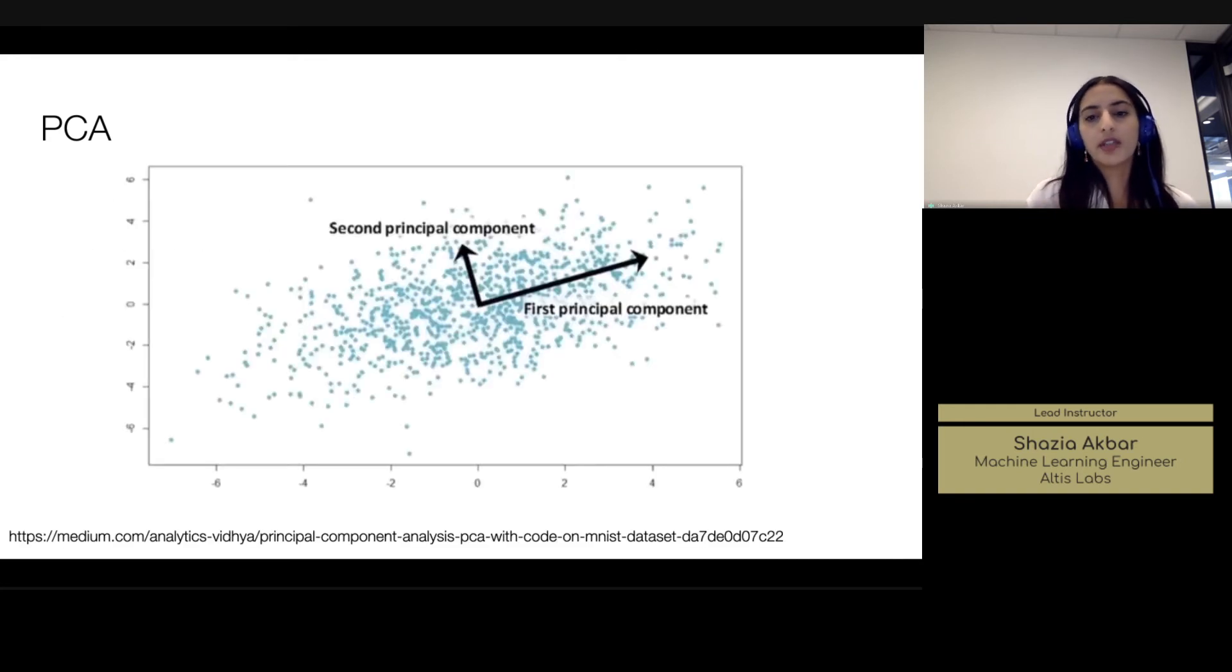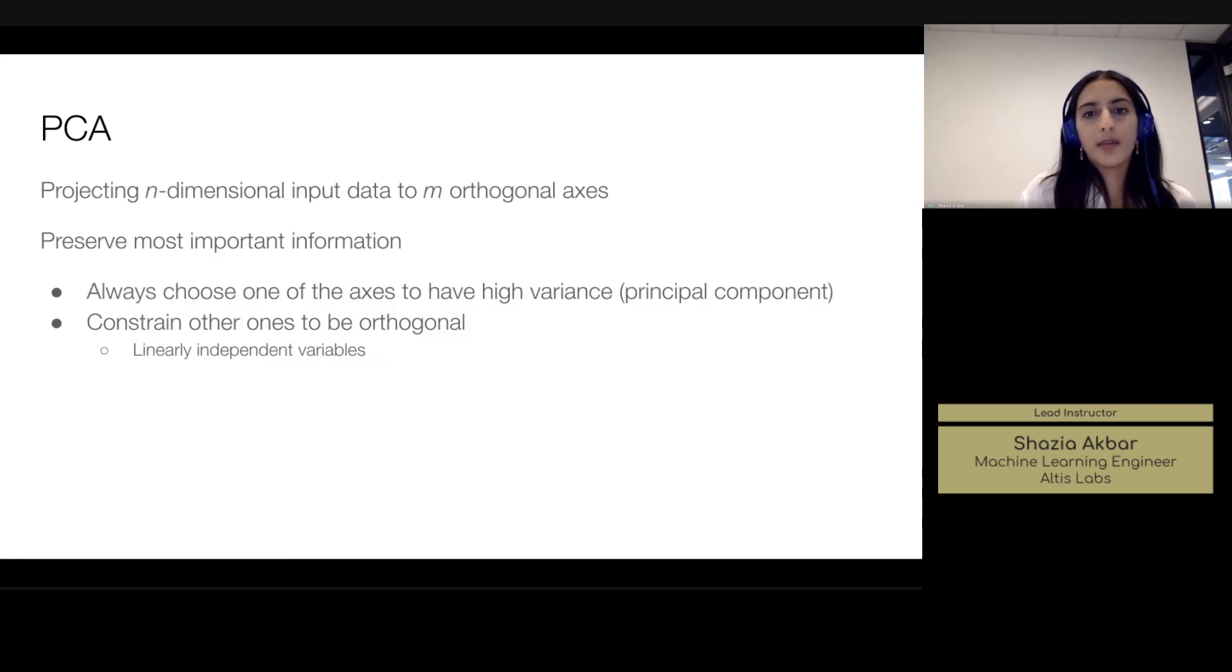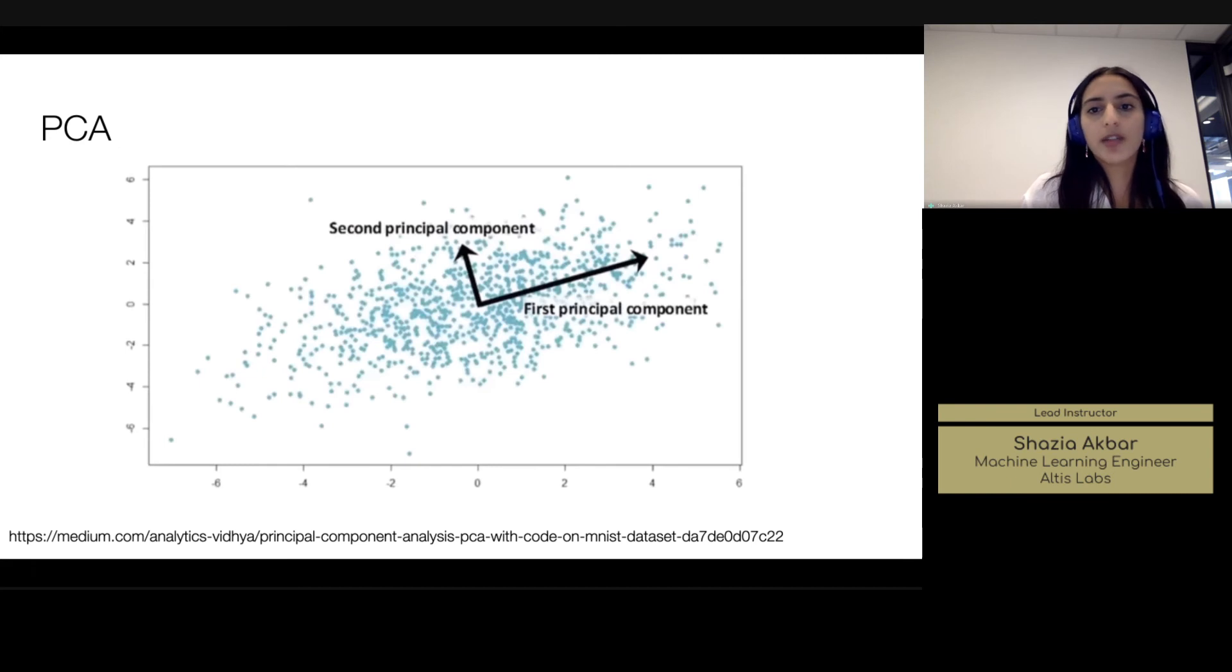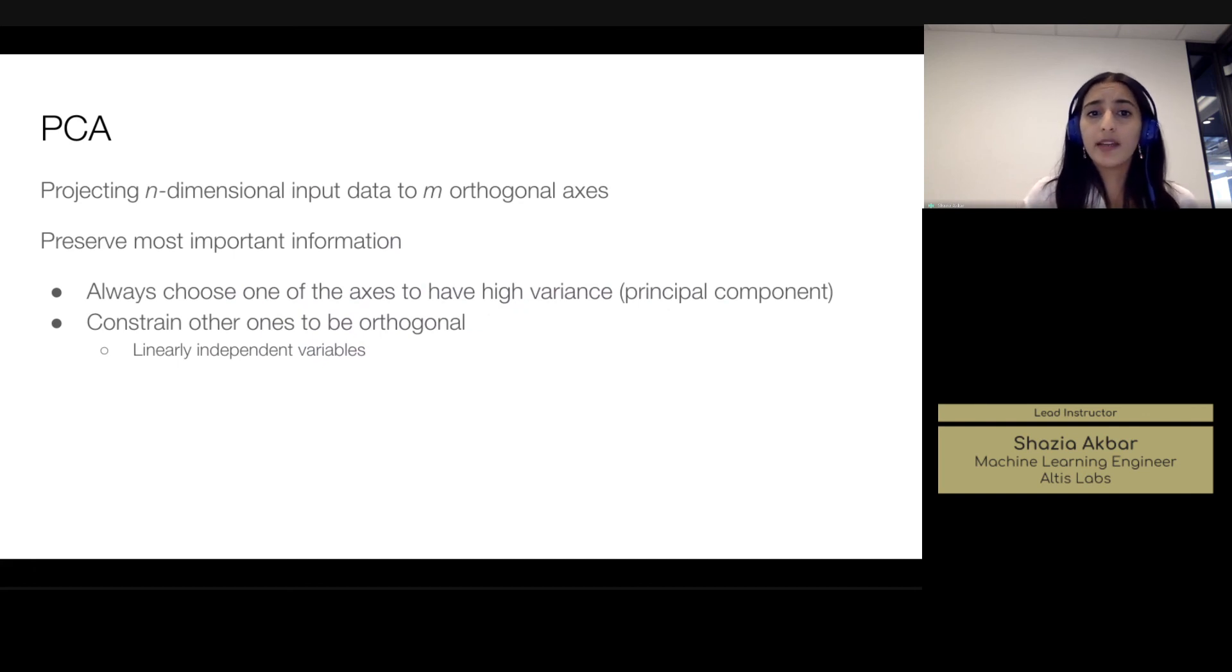This image here is actually a really nice way of looking at lots of data points in a particular feature space. And our first component that we extract from that data kind of captures what's most common across all of these data points. And then the second principal component is the next important, is the next linear mapping there which preserves the second most important information and so on and so forth. And if we continue with this, we can capture more and more refined low variance information within our data as we continue on. So this is a really nice way of mapping high dimensional space to m number of orthogonal axes.